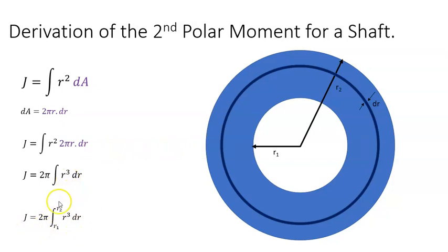When I integrate r cubed, I get r to the 4 over 4. Substituting in r2 and r1, I get r2 to the power 4 minus r1 to the power 4. What happened here was 2π over 4, which simplifies because 2 goes into 4 two times. So that's my second polar moment.